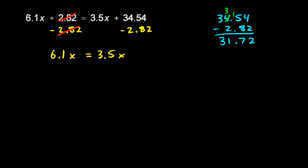So, the right side, 3.5x plus 34.54 minus 2.82. The 3.5x stayed right there, and the 34.54 minus 2.82 is 31.72.